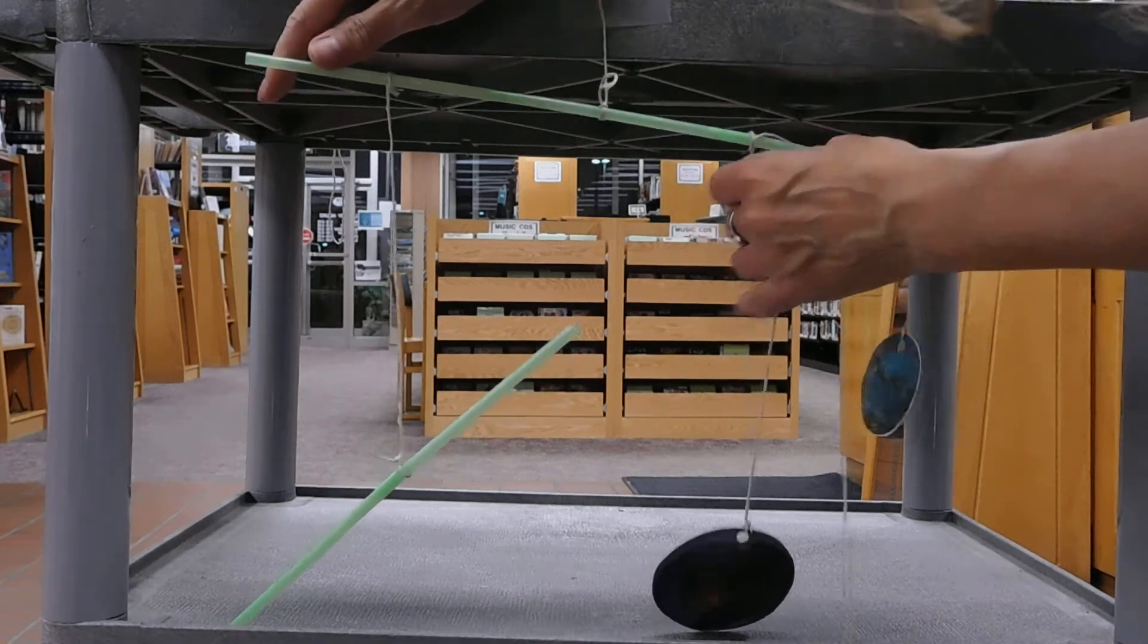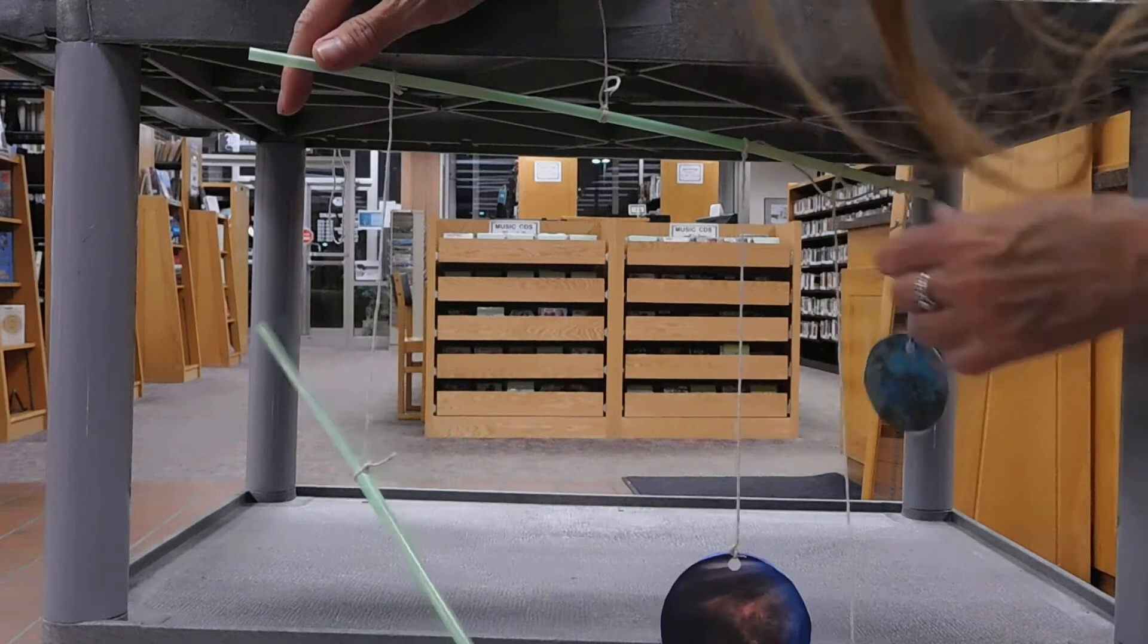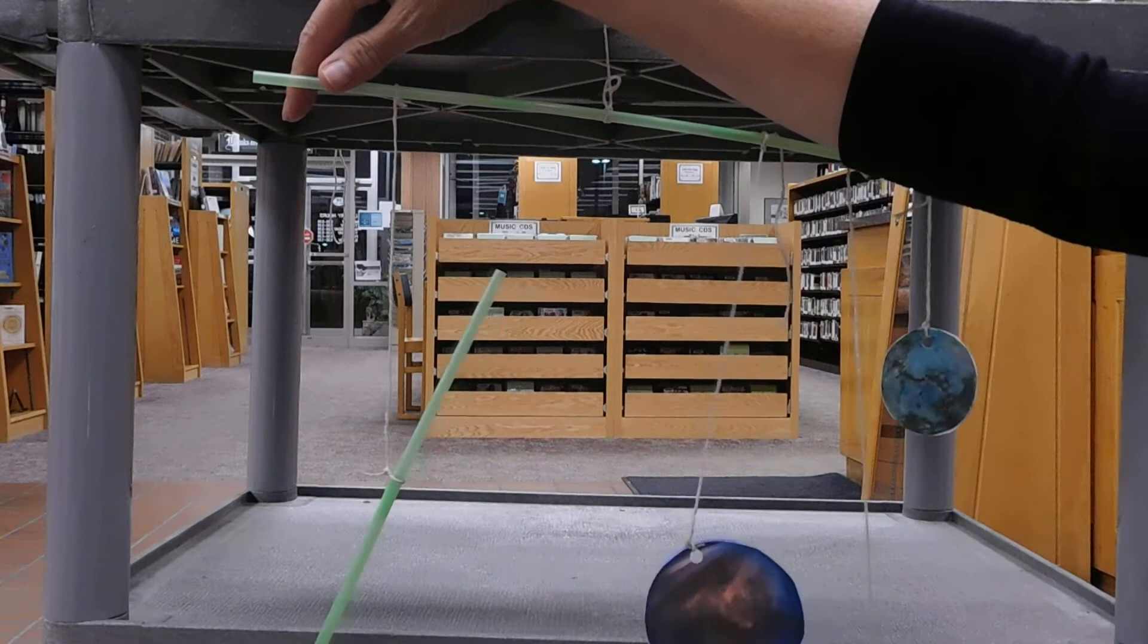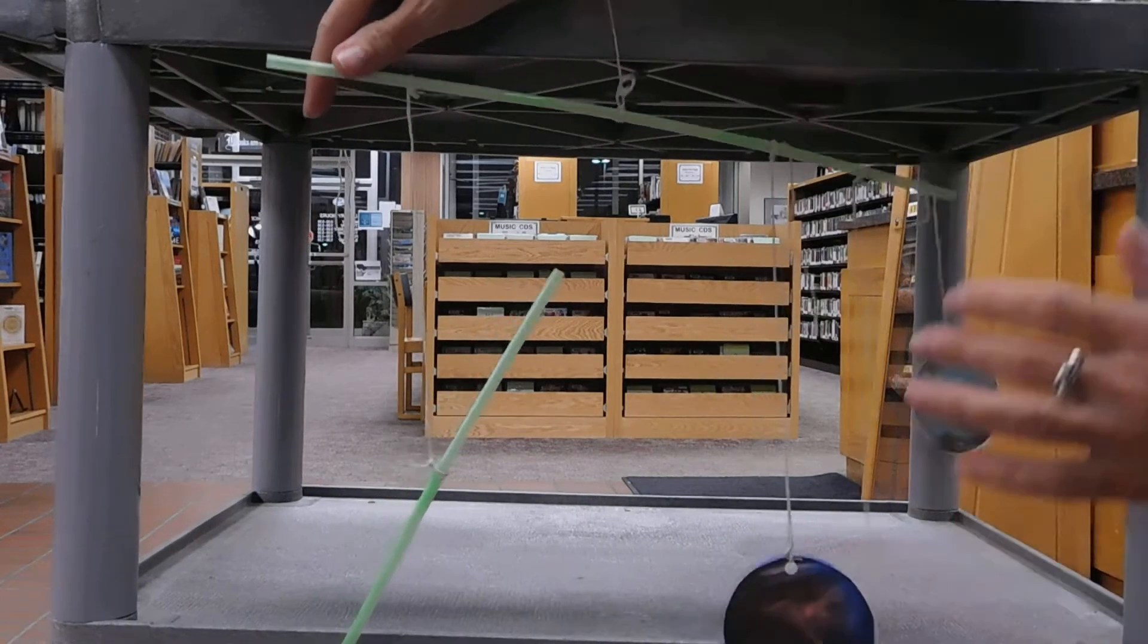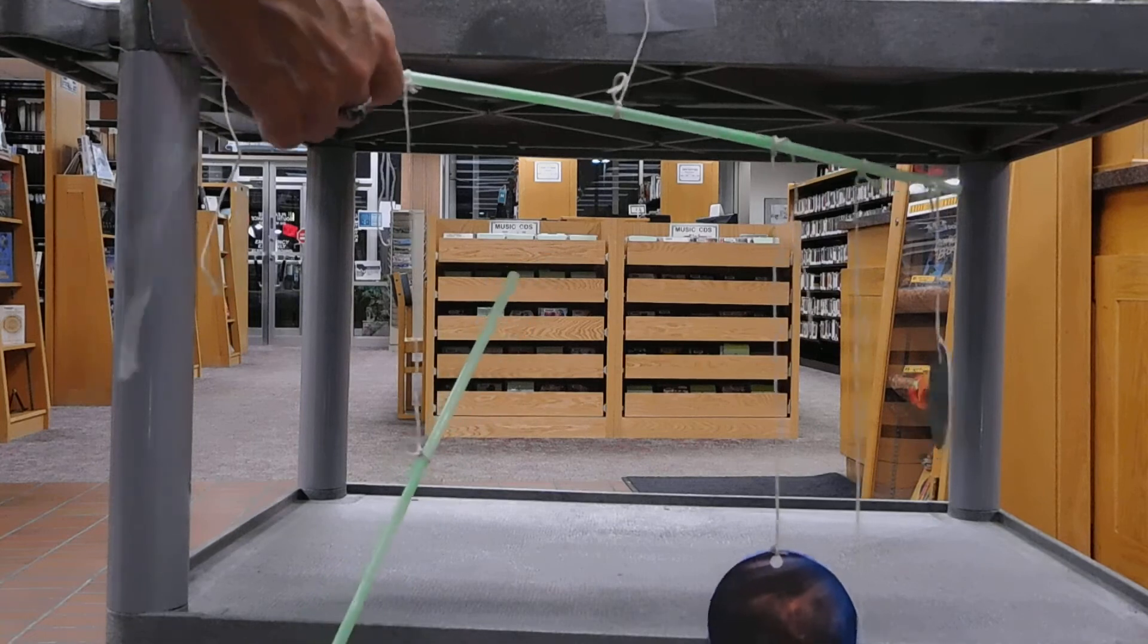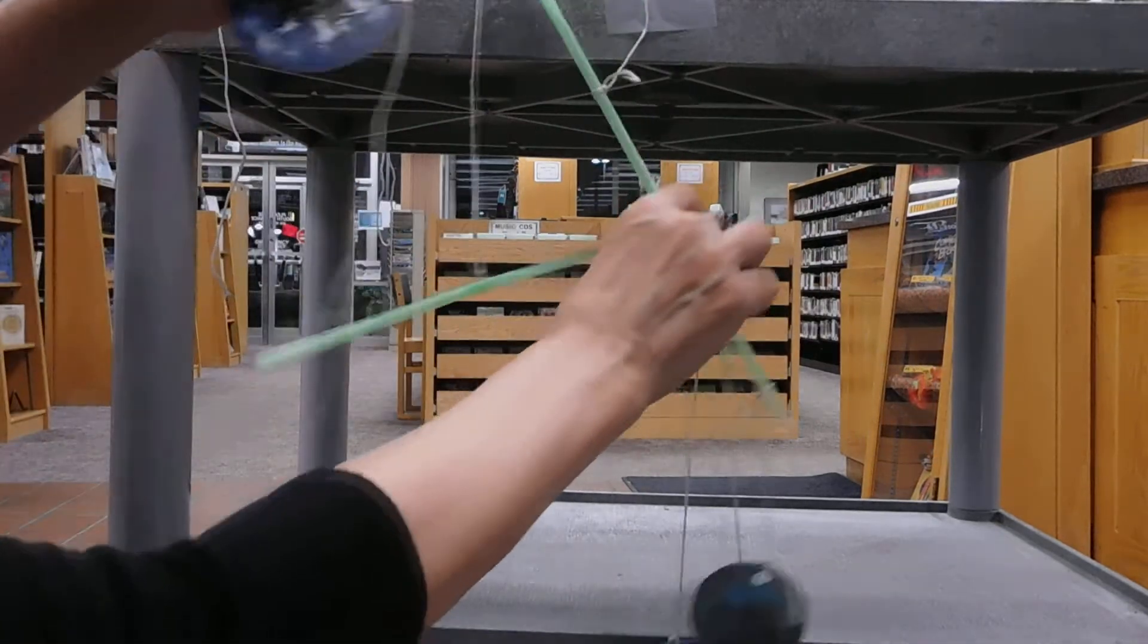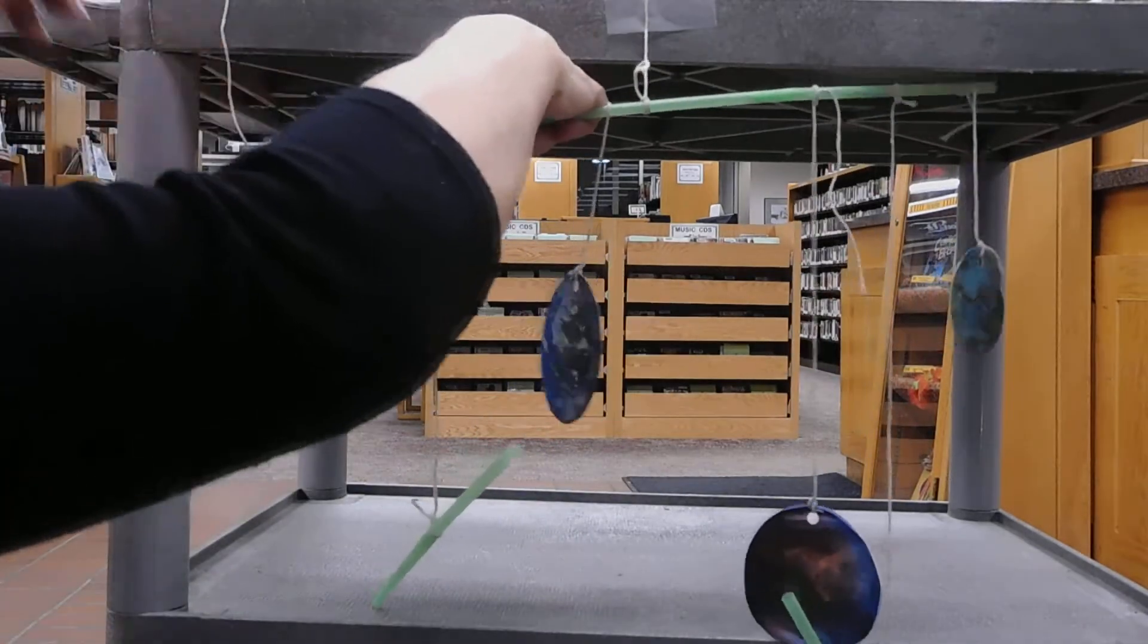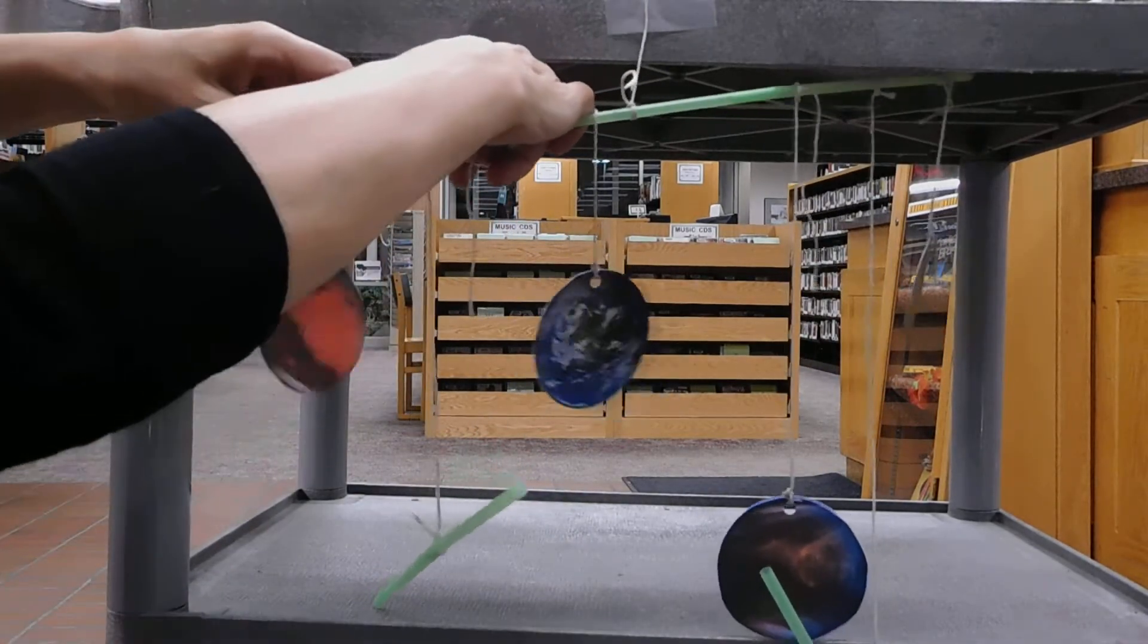So you can see that mine is not balanced right now. But I have Mercury and Venus on that side. So next, I'm going to attach the Earth and Mars.